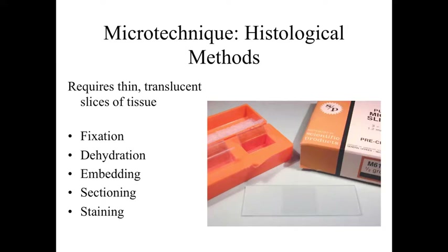The basic processes associated with the histological method are that we're going to have to fix the tissue, dehydrate it, embed it in a supportive media, section it into thin slices, and then ultimately stain it to be able to see specific structures within it. Fixation, dehydration, embedding, sectioning, and staining are the processes we're going to understand by the end of this mini-lecture.